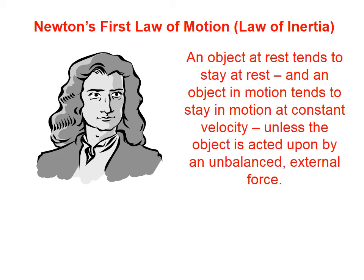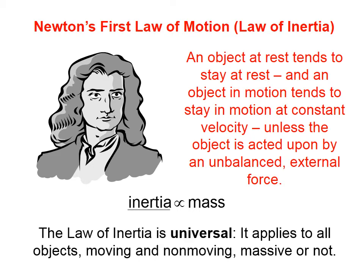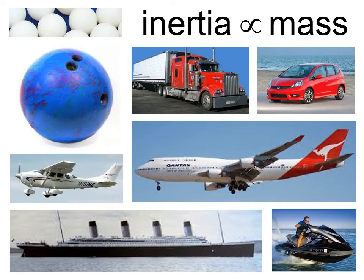Newton's first Law of Motion is also called his Law of Inertia. It says: an object at rest tends to stay at rest, and an object in motion tends to stay in motion at constant velocity, unless the object is acted upon by an unbalanced external force. Inertia is proportional to mass. The Law of Inertia is universal — it applies to all objects, moving and non-moving, massive or not. The more mass something has, the more inertia it has, and inertia is the resistance to changing its state of motion.